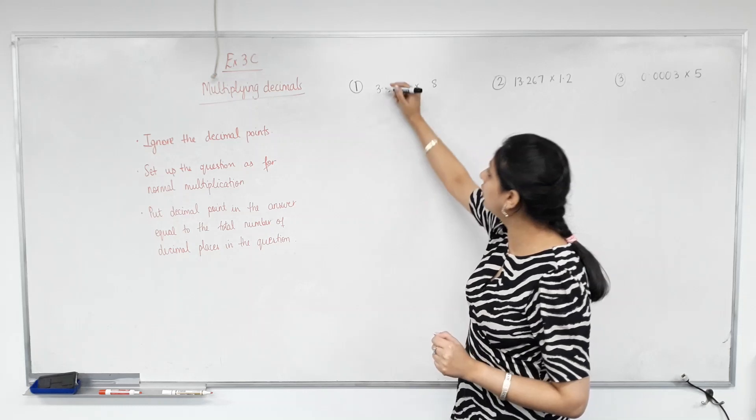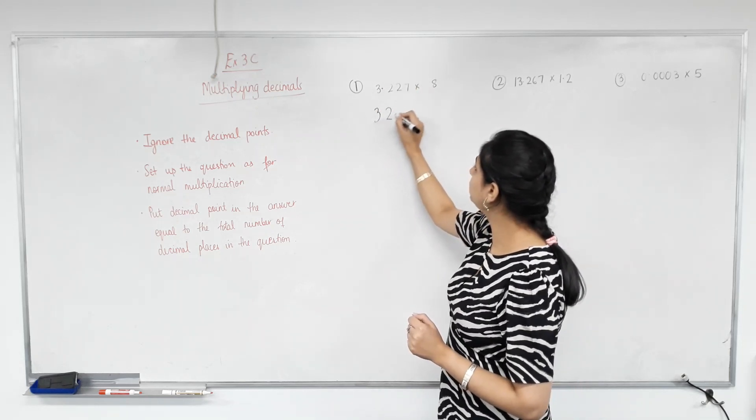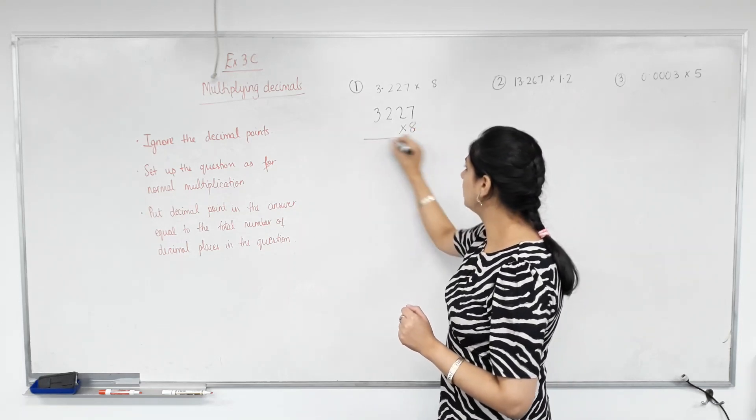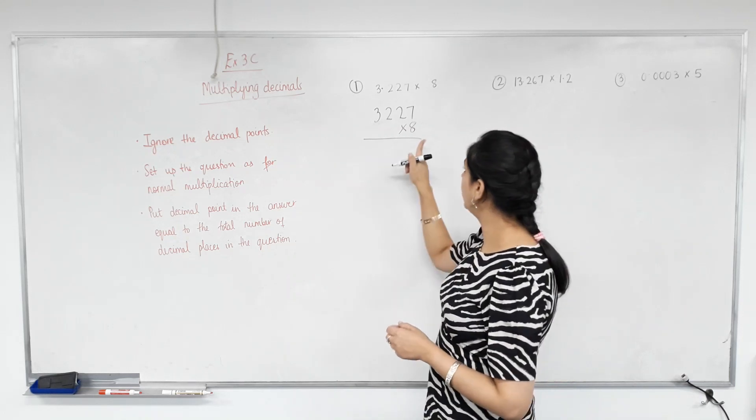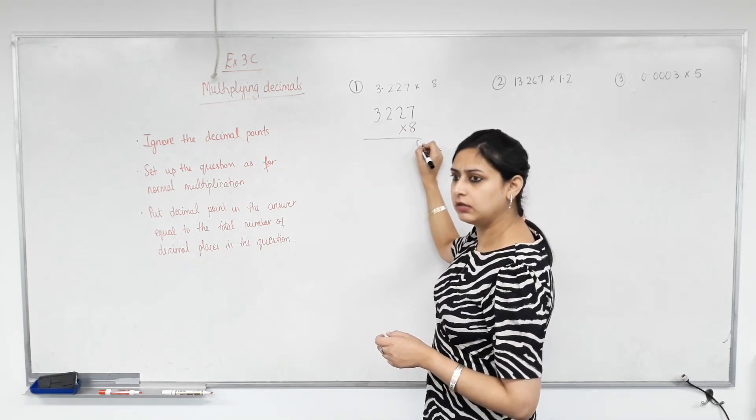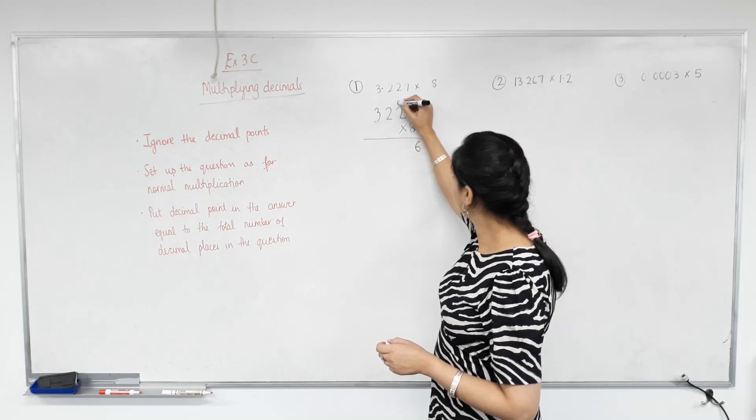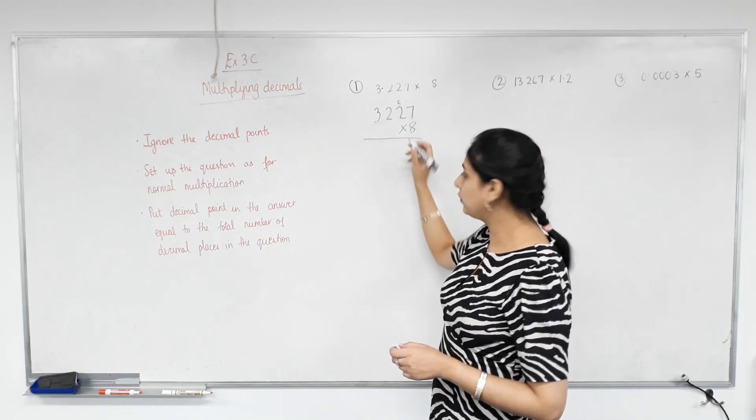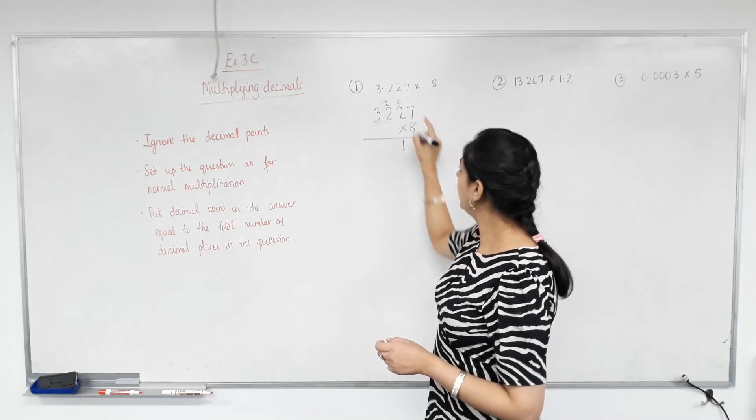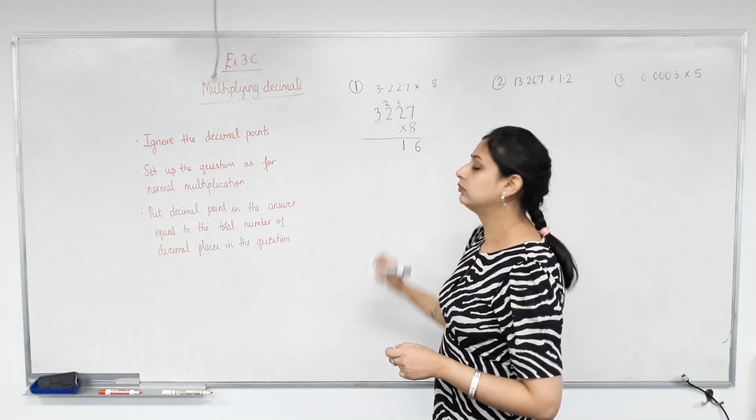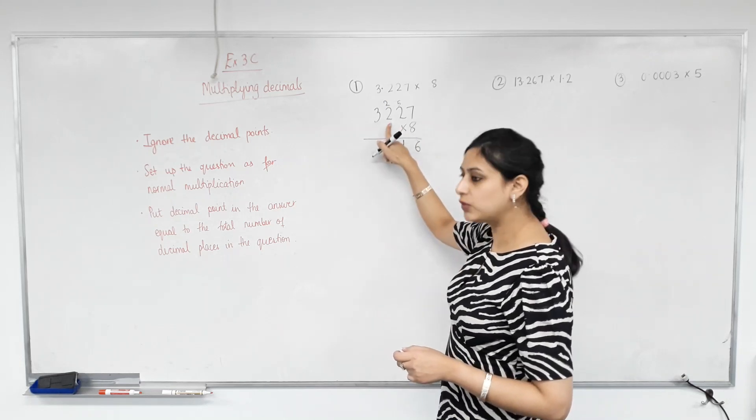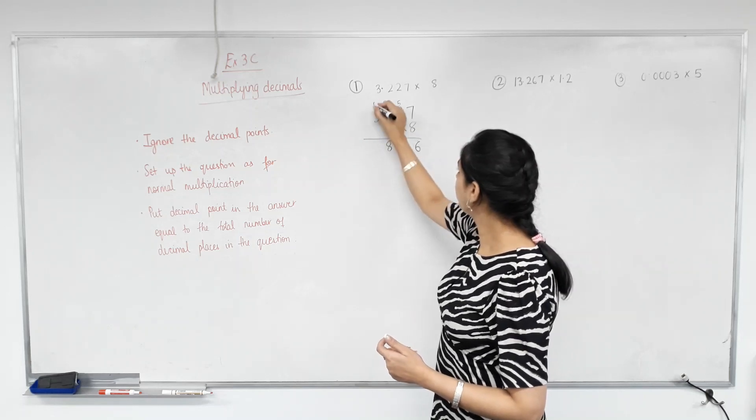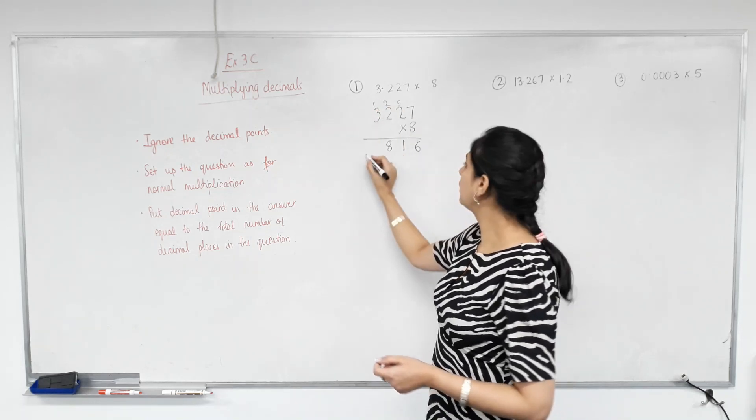So first I'm going to ignore the decimal point, so I'm going to find out 3,227 times 8. We've all done that before, so I'm going to multiply. 8 times 7 is 56. 5 goes here. 8 times 2? 16. Plus 5? 21. 8 times 2 is 16. Plus 2? 18. 8 times 3 is 24. Plus the 1? 25.